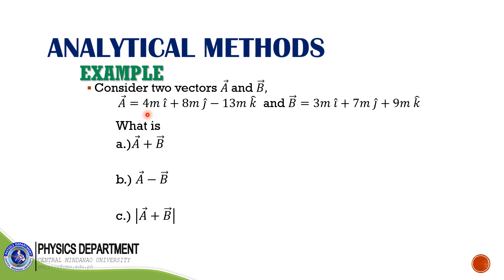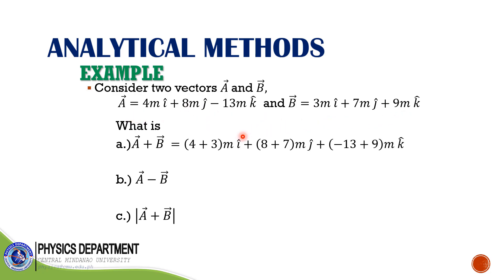For example, if A equals 4 i-hat plus 8 j-hat minus 13 k-hat meters and B equals 3 i-hat plus 7 j-hat plus 9 k-hat meters, what is A plus B? Simply add the components: (4 plus 3) i-hat plus (8 plus 7) j-hat plus (minus 13 plus 9) k-hat, which gives A plus B equals 7 i-hat plus 15 j-hat minus 4 k-hat meters.